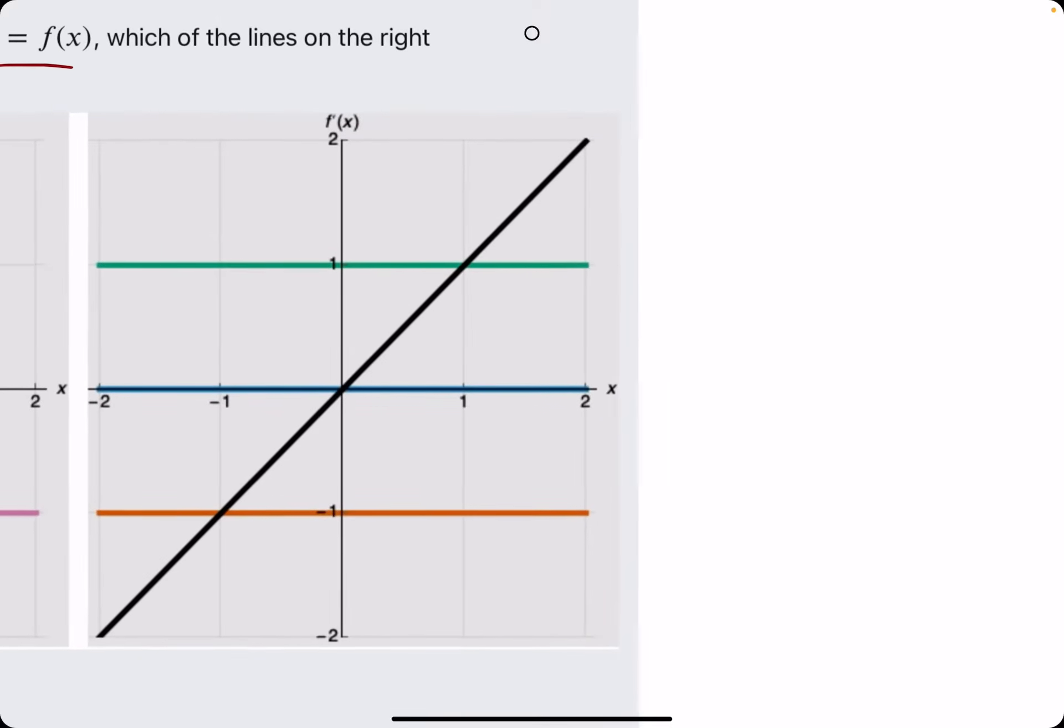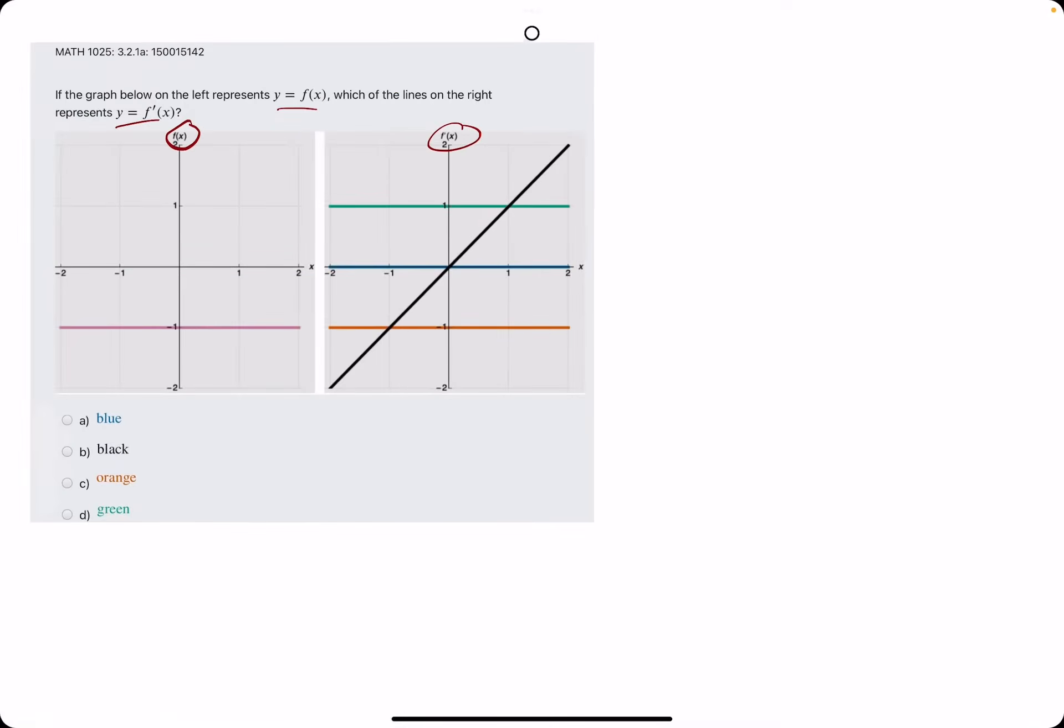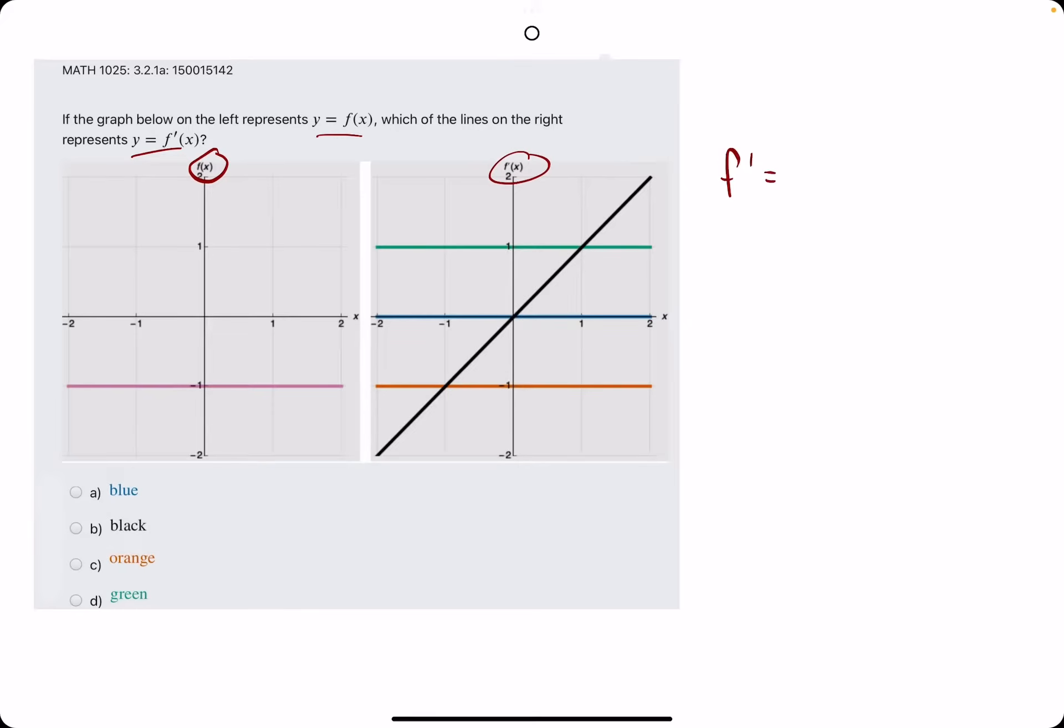In other words, the y values on this graph represent f prime. Let's think about what f prime represents. Derivative of f. In other words, it's representing the slopes of f(x) at any x value.